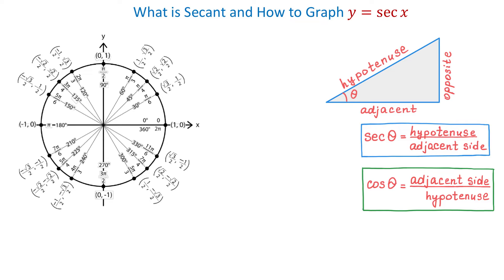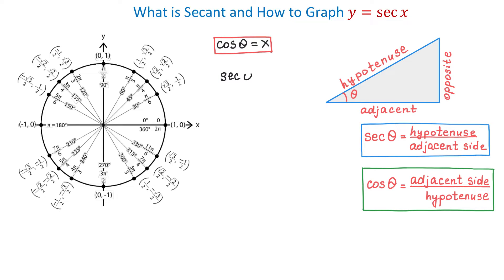On the unit circle, the values of cosine are represented by the x-coordinates of the points on the unit circle, and we write that cosine of angle theta equals x. For example, cosine of pi over 6 is square root of 3 over 2, and cosine of pi over 2 is 0. To find secant of an angle theta using the unit circle, we divide 1 by x, because 1 over x is the reciprocal of x.